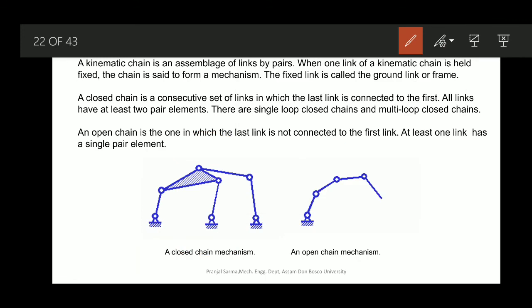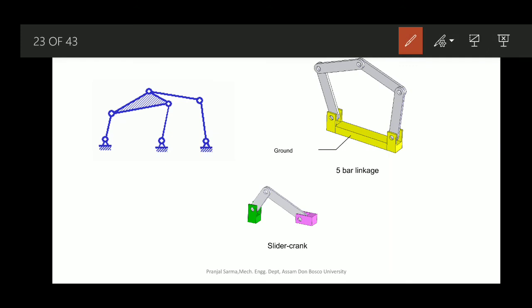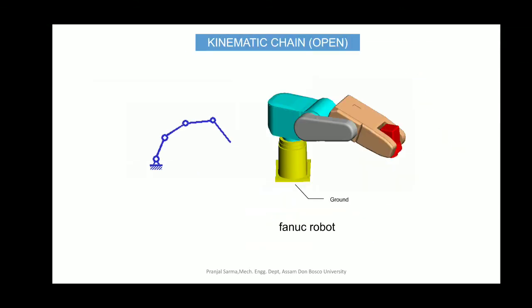Some examples of mechanisms are shown here. The lower figure shows the slider-crank chain from which we obtain the slider-crank mechanism. The crank, connecting rod, and slider are visible. The connecting rod connects the crank with the slider, and with the guides and fixed positions, we get the slider-crank mechanism. A five-link mechanism is also shown with links numbered: ground link 1, then links 2, 3, 4, and 5.